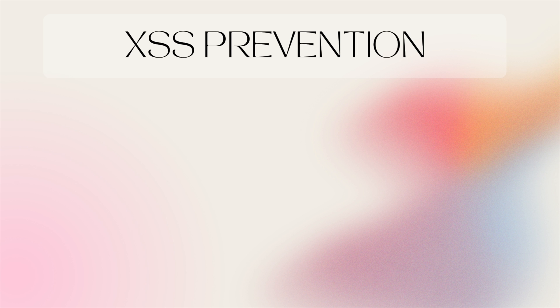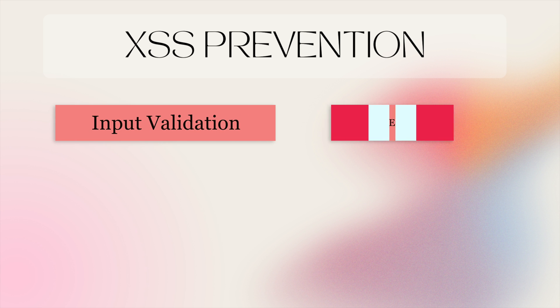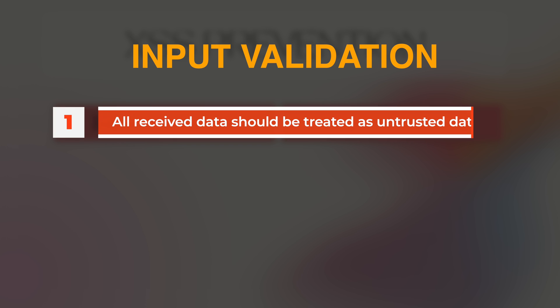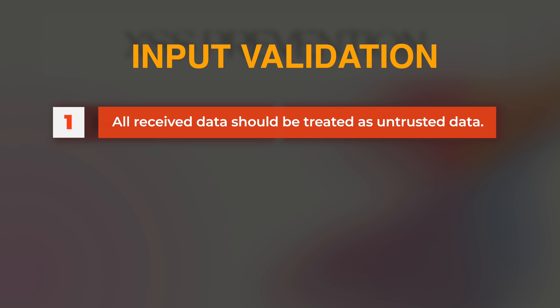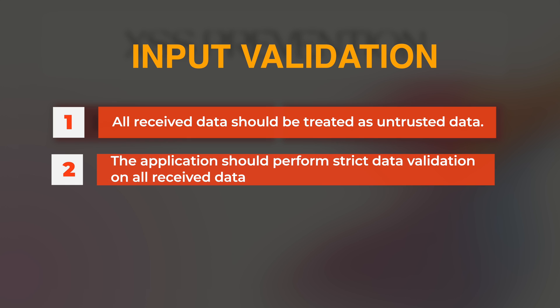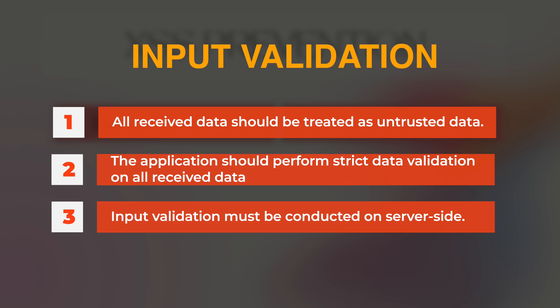There are two main defensive mechanisms that protect a web application against cross-site scripting attacks: input validation and output encoding. To implement robust input validation, all received data — including user input, HTTP headers, HTML form inputs, and query strings — should be treated as untrusted. The web application should perform strict data validation on all received data to ensure they only contain the expected value. Input validation must be conducted server-side; an attacker can easily bypass client-side input validation using a proxy tool or even a simple web browser extension.